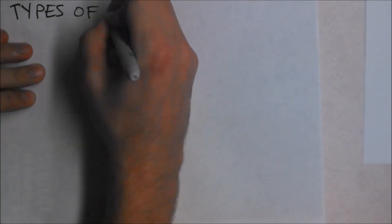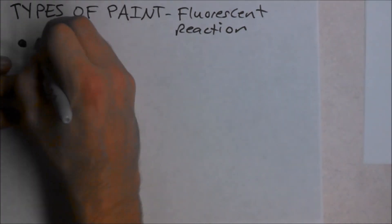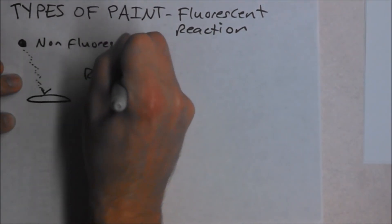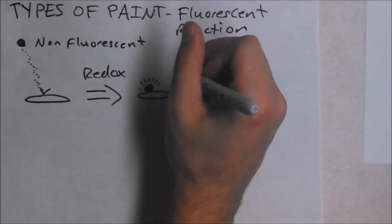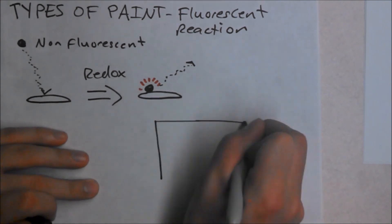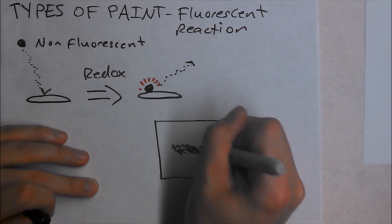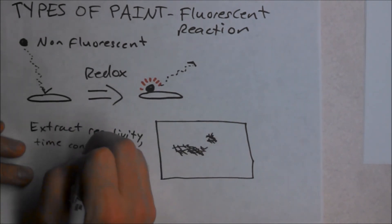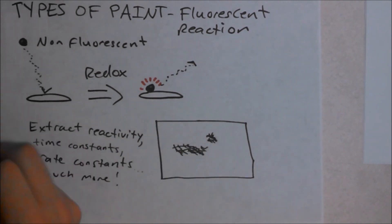PAINT can also be used to measure nanoparticle catalysts. A non-fluorescent molecule can diffuse to the surface of a catalyst particle and be converted to a fluorescent particle by a redox reaction. The fluorescence event is recorded and the dye molecule diffuses back into the solution where it is no longer excited. For this form of PAINT, the fluorescence is used to create a super-resolution image but also extract time and rate constants of the reaction and catalyst particle activity. Thanks for watching this video on super-resolution and PAINT!